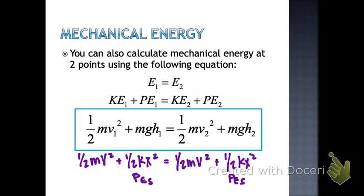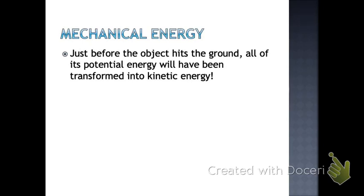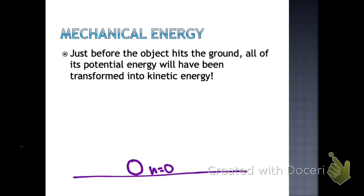When we talk about objects at the beginning and end of their motion, by the time the object hits the ground we're referring to just before it hits — similar to vertical kinematics problems. At that point, height equals zero. By that time, all potential energy has been converted to kinetic energy. At the lowest point, we have only kinetic energy. At the highest point, all potential. Anywhere in between, we have both types.